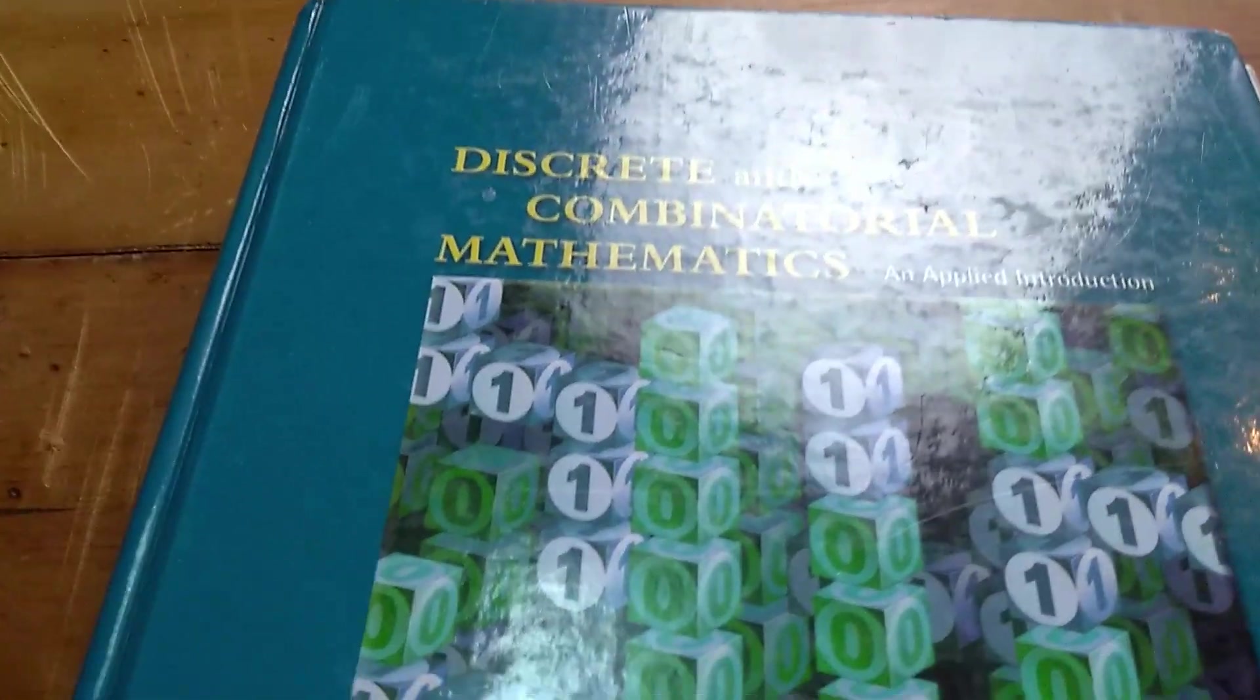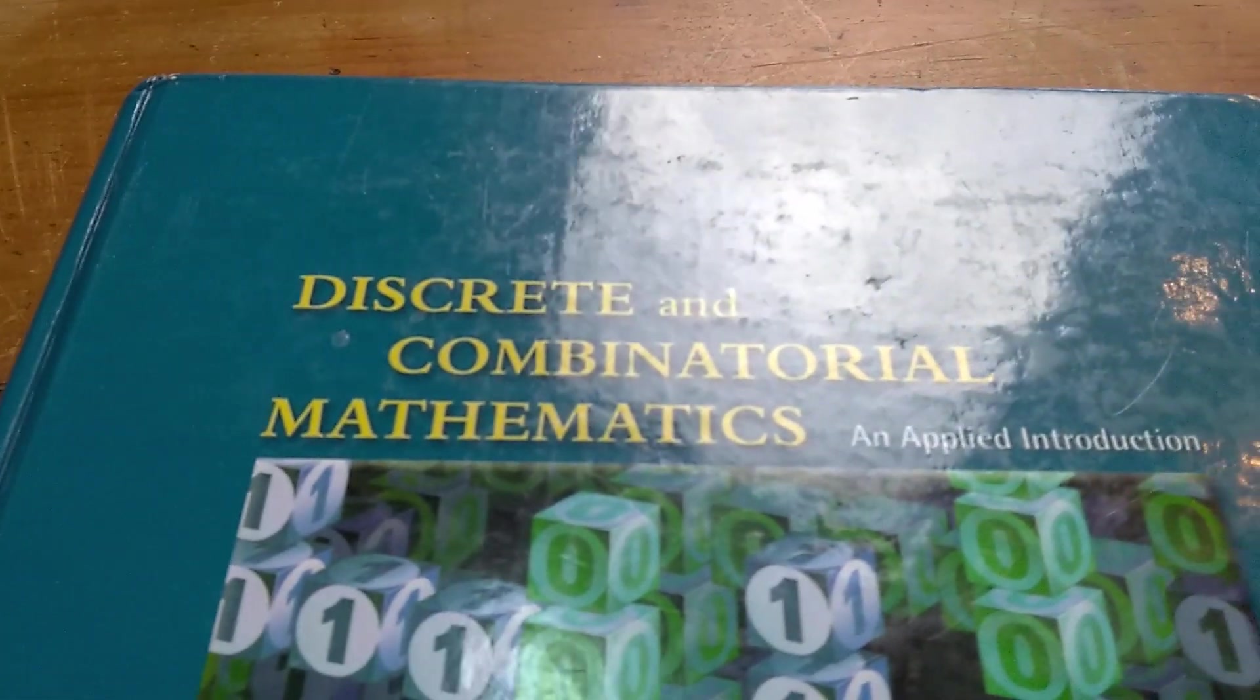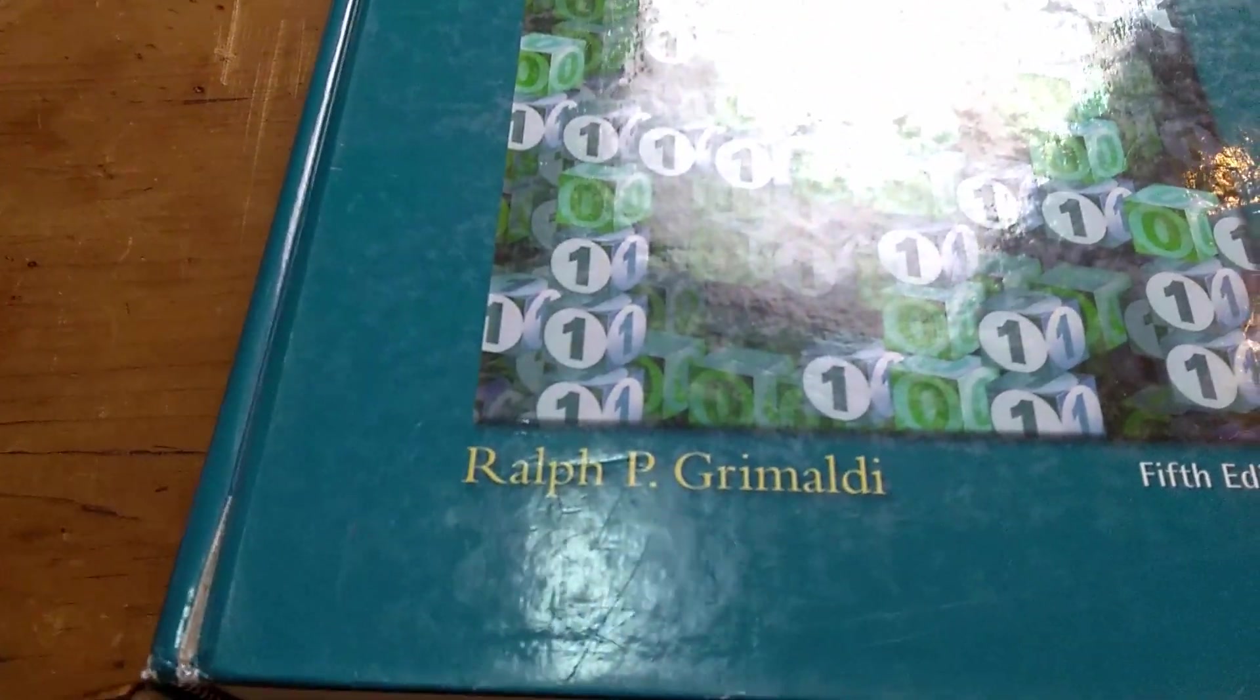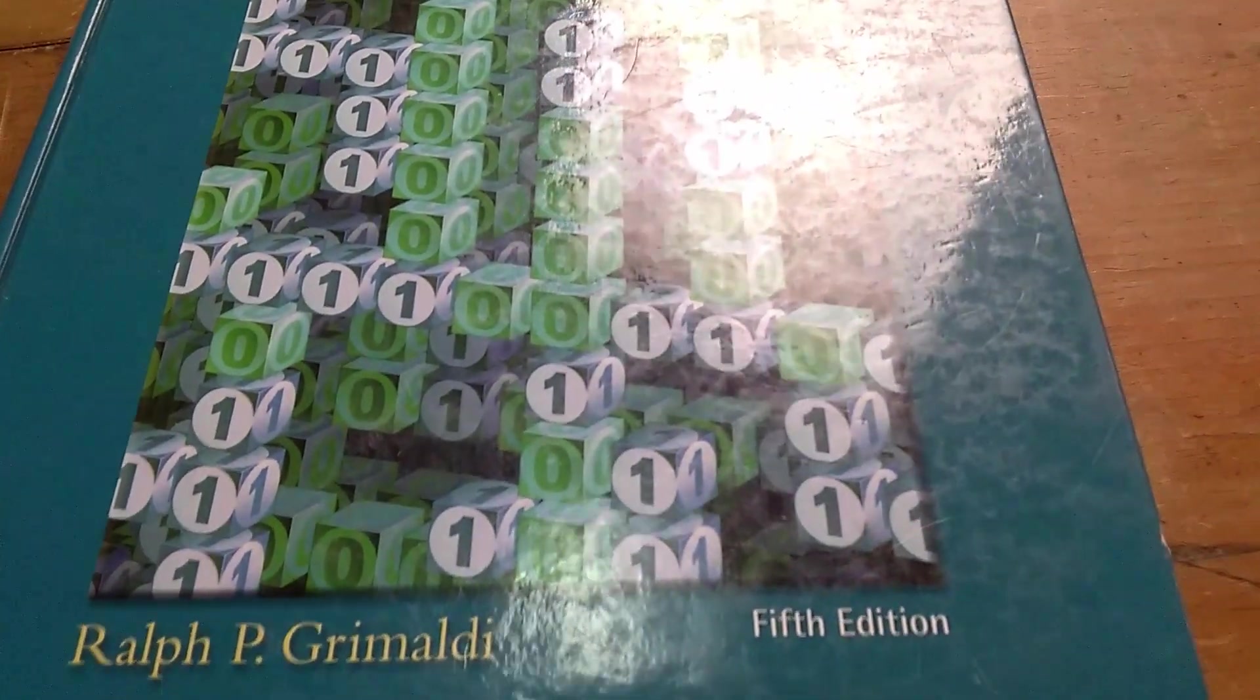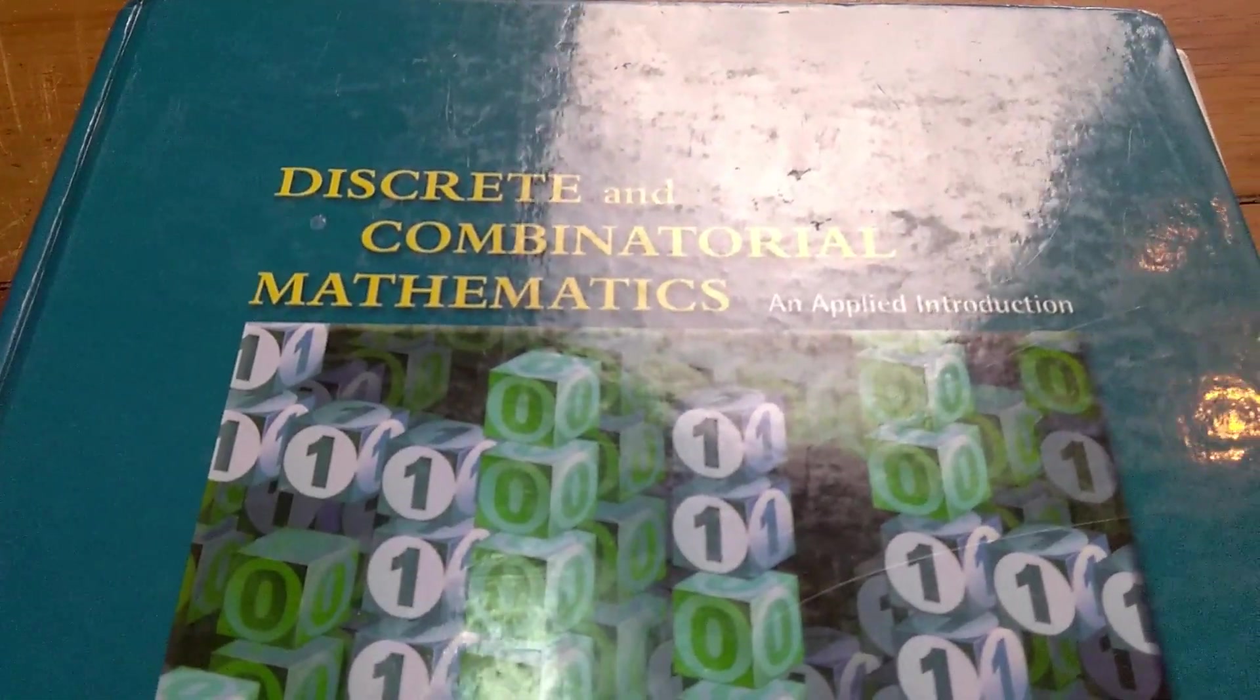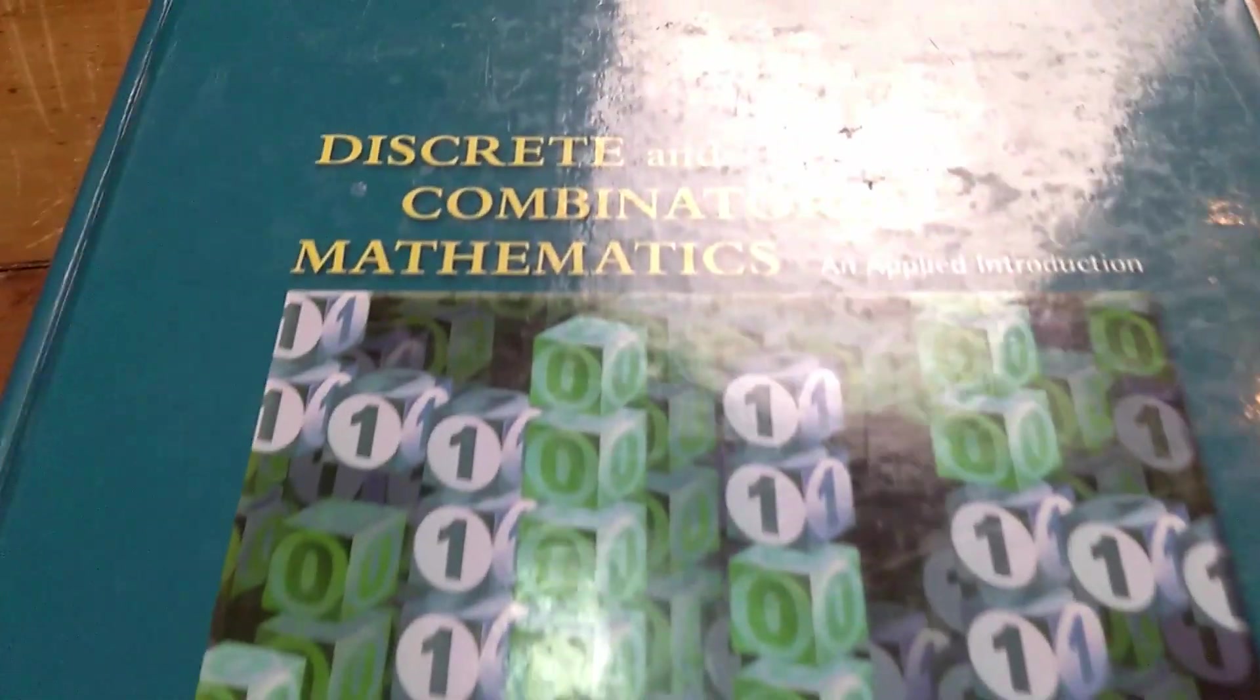Hi everyone. In this video we're going to talk about a really nice book. It's called Discrete and Combinatorial Mathematics, an Applied Introduction, and it's written by Ralph P. Grimaldi. This is a pretty solid textbook. I have spent quite a bit of time reading through several of the sections in this book. It's a really good book on discrete mathematics.